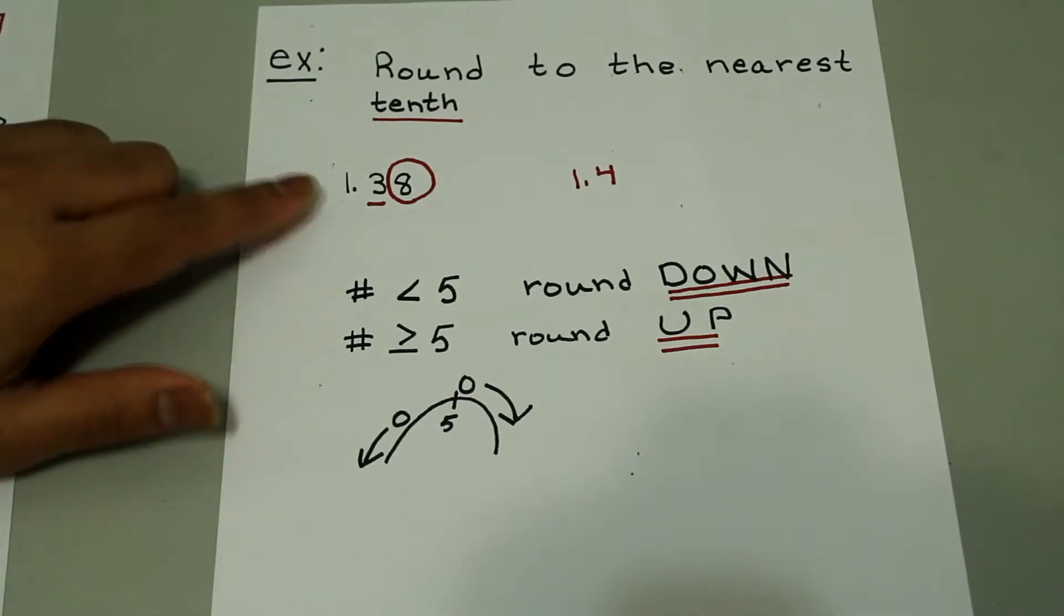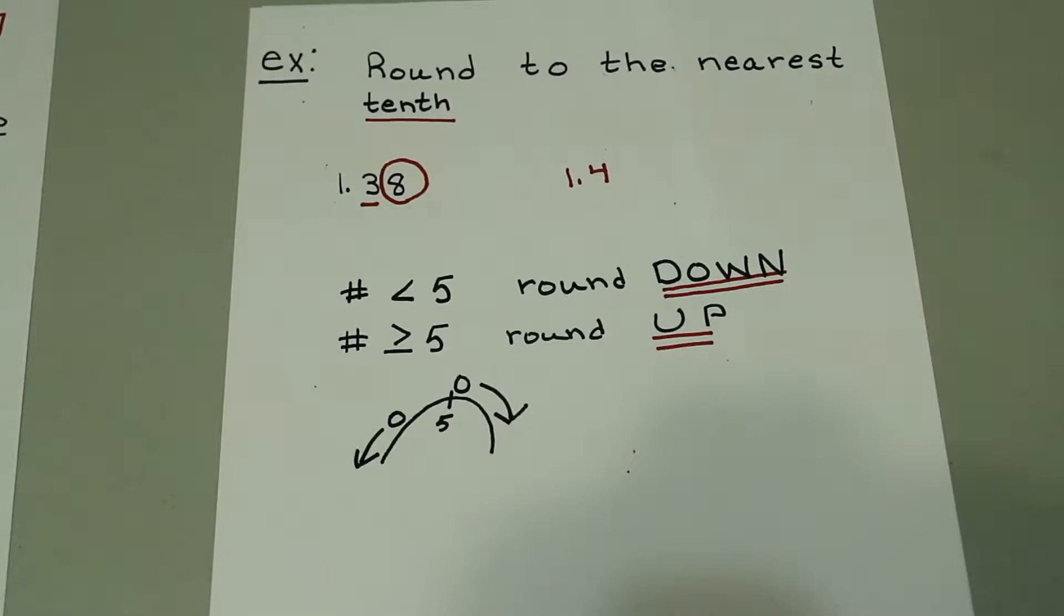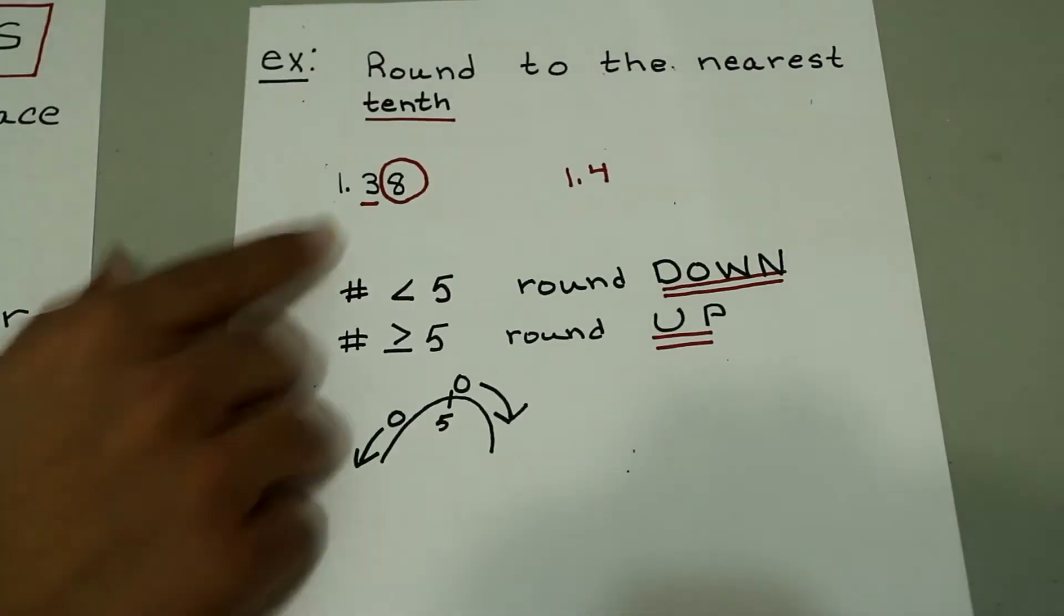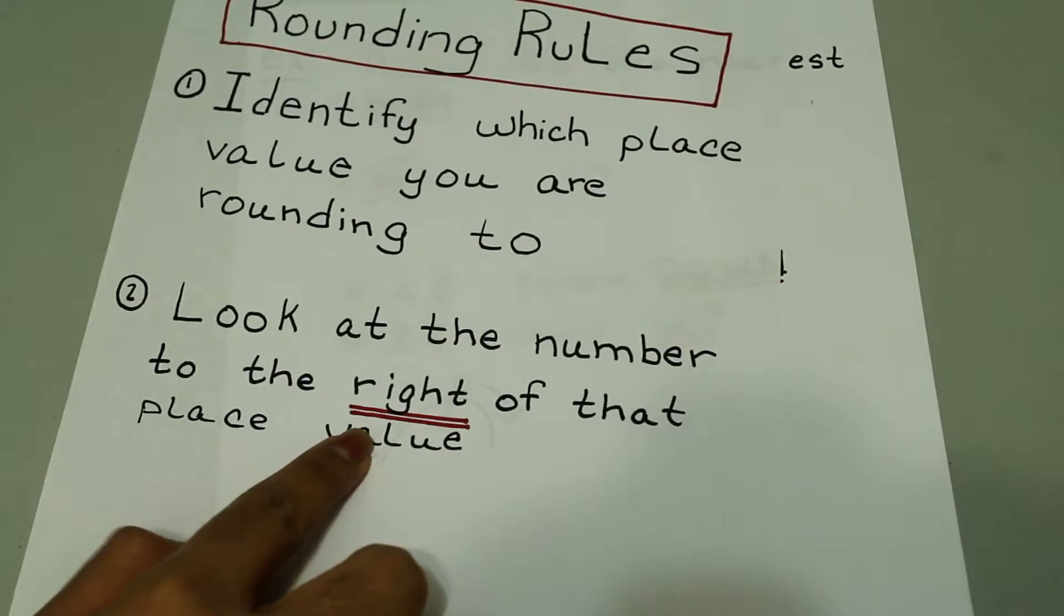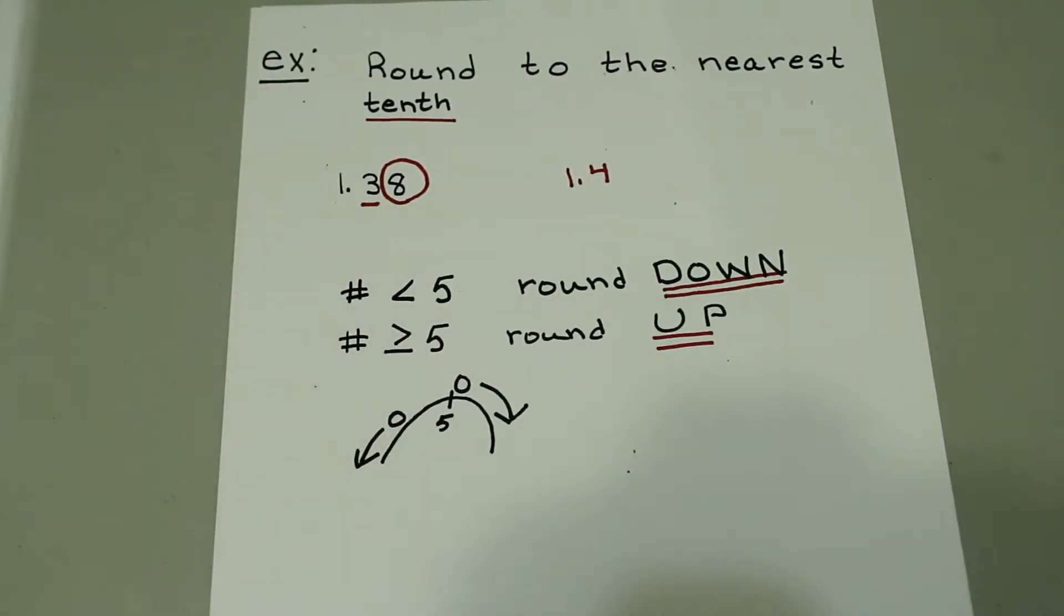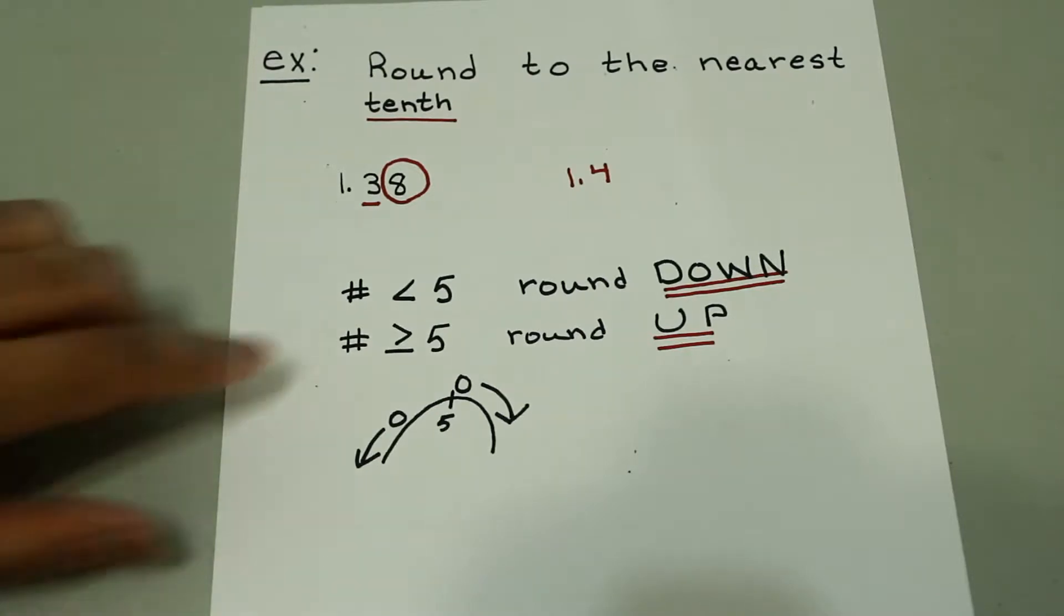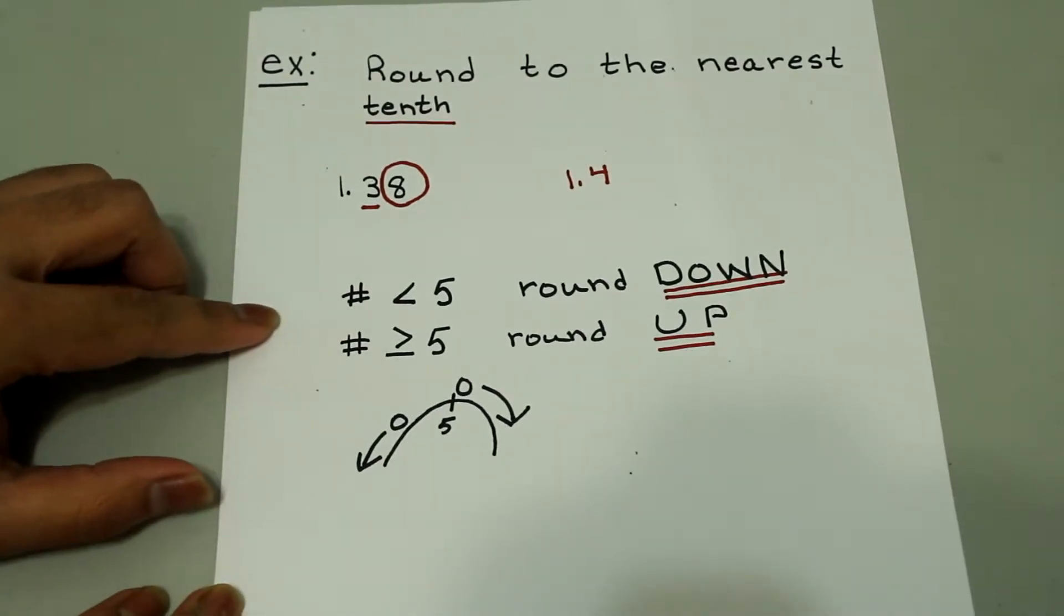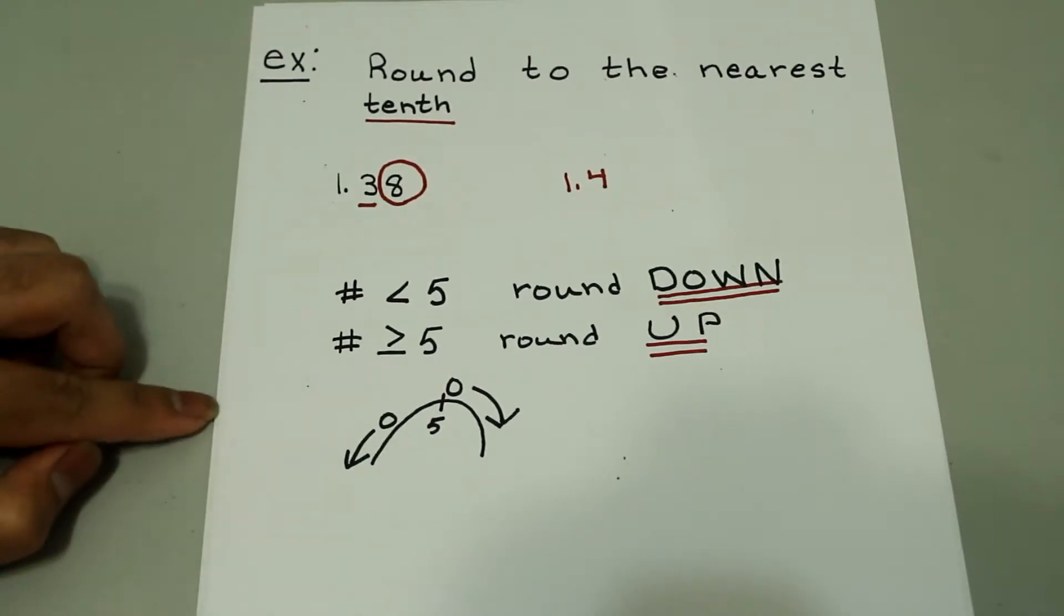So for example, round 1.38 to the nearest tenth. We're looking at the tenth place value, so that's the first step. I've underlined that place value and we look to the number to the right of that place value, which is in the hundredths place, which is the 8. The 8 is going to tell us if we should round up or down. If the number on the right is less than 5, we round down. And if that number is greater than or equal to 5, we round up.